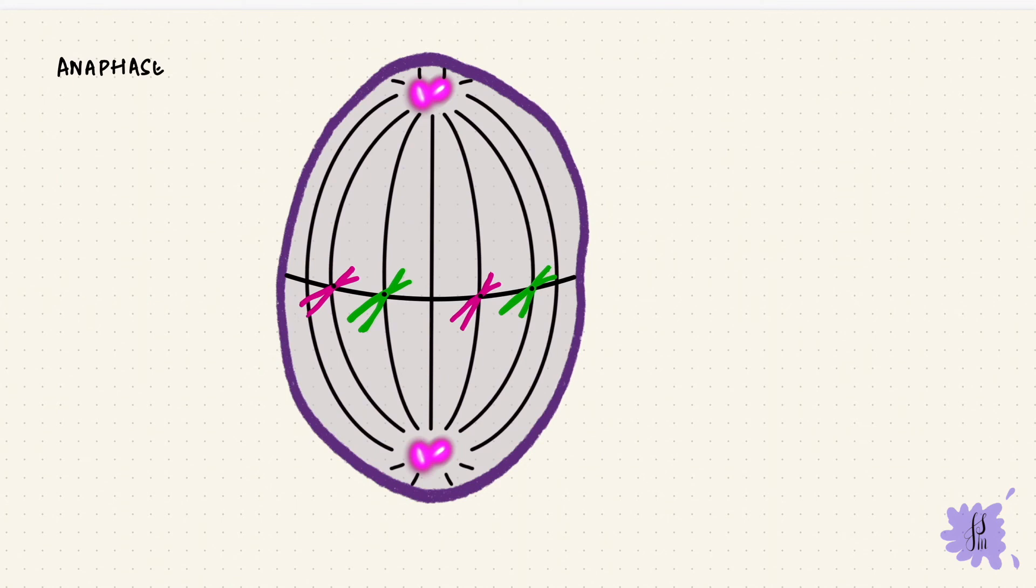Next, the cell moves into the anaphase. Now the chromatids are going to get pulled towards the poles. So they split at the centromere and move along the spindles. Now this is when the chromosomes get distributed between the cells. 46 chromosomes are going to go to each cell.